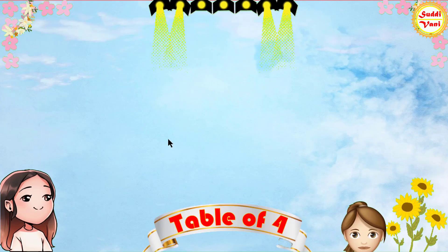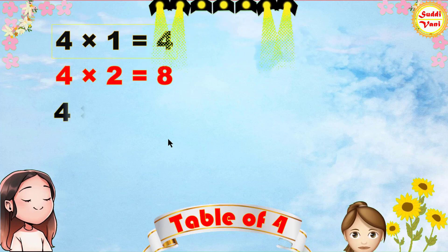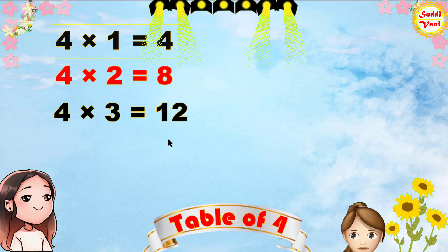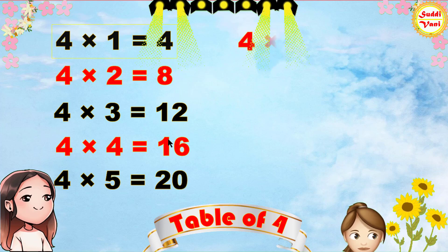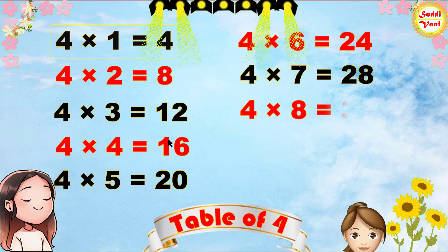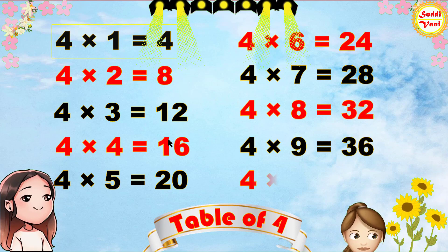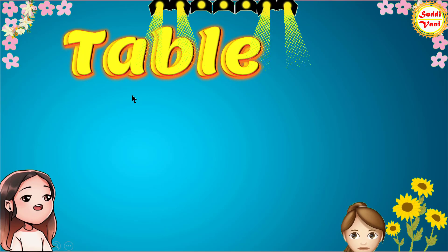Once again: 4 7s are 28, 4 8s are 32, 4 9s are 36, 4 10s are 40.